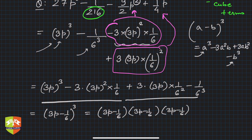So what did we get as the final factorization? (3p - 1/6)³. Check it - you will get the same expression.